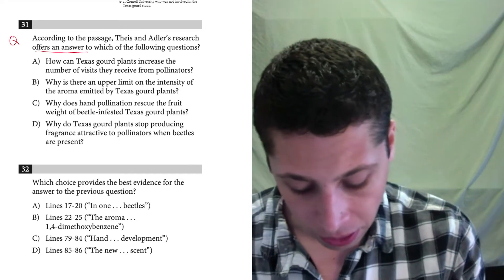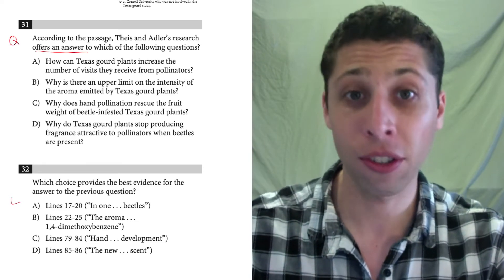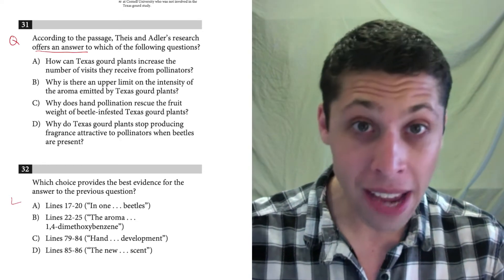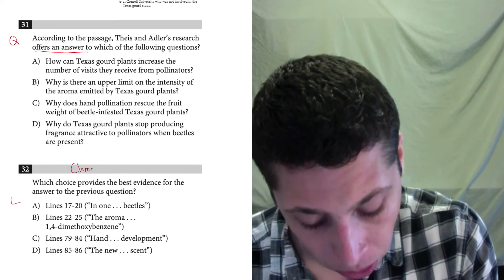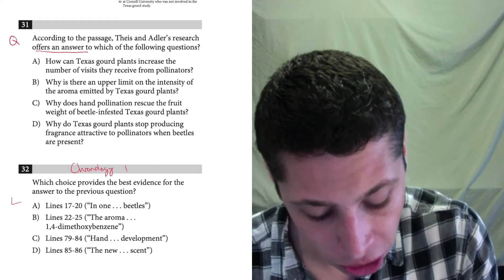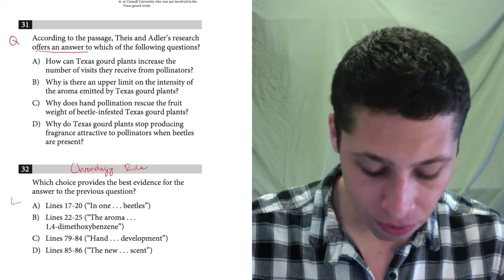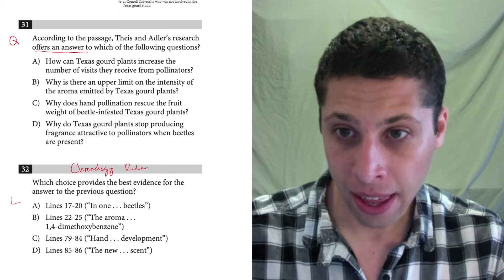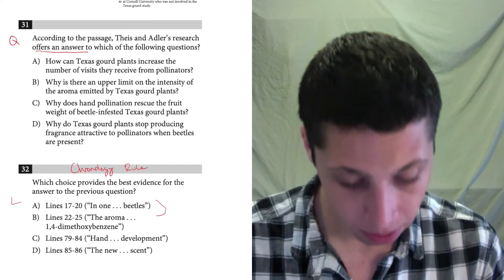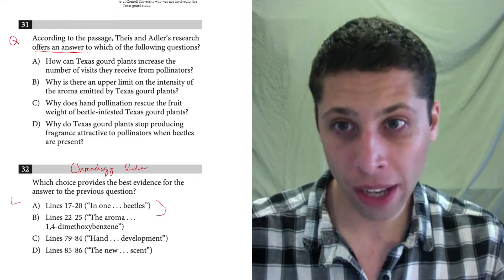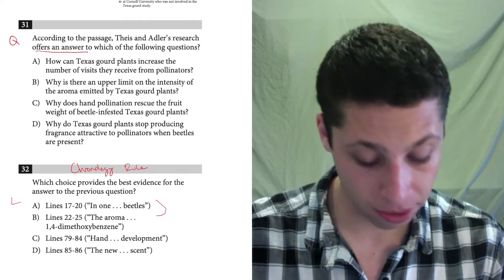Now we go to the line references and we try to find one that seems to offer an answer to something. So based on the chronology rule, which tells us that the questions are supposed to be in the order that they appear in the passage, it's very unlikely that choices A and B are correct. So for this question, we need to look back and say, okay, well, where did we have our last line reference?